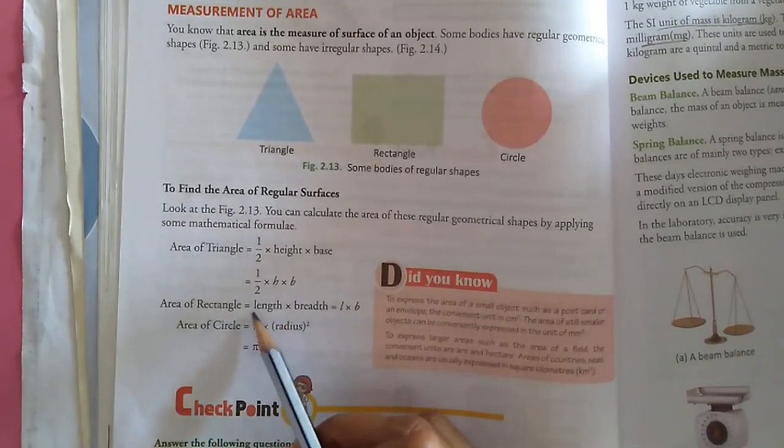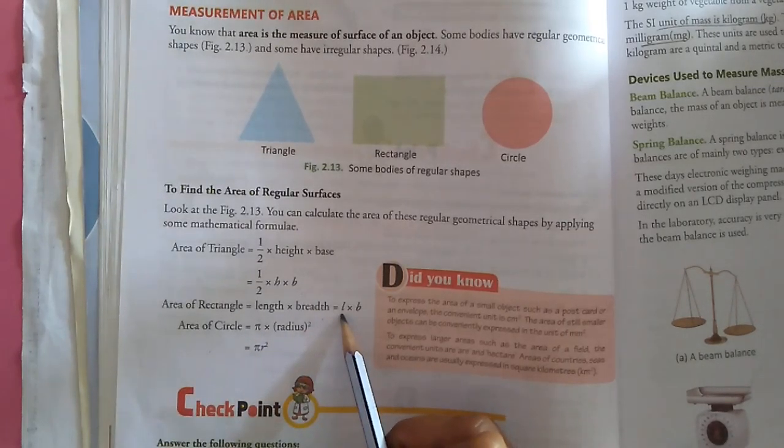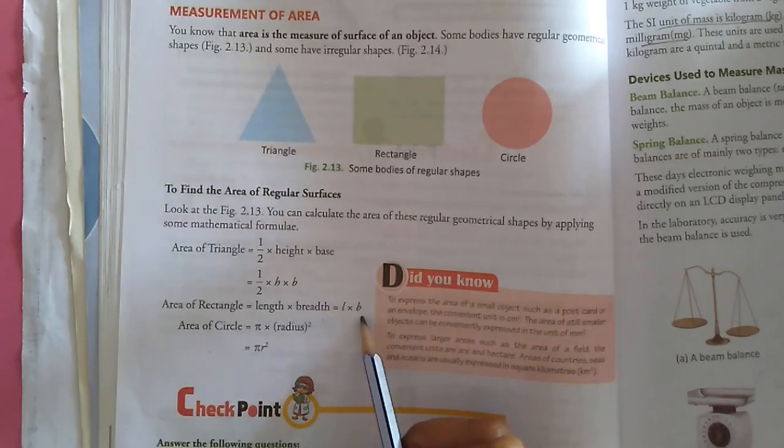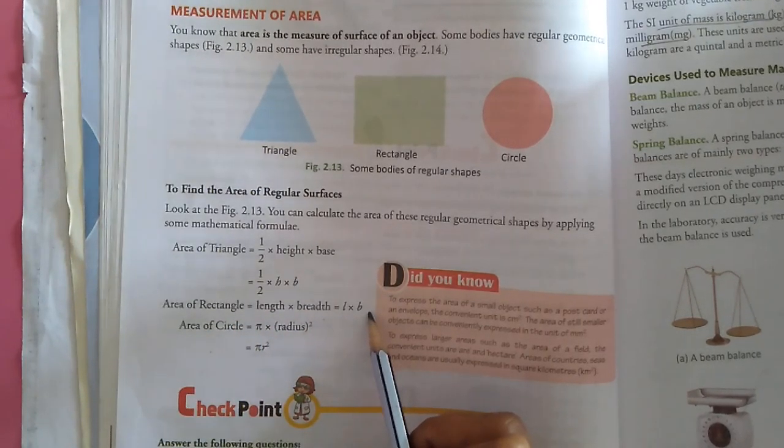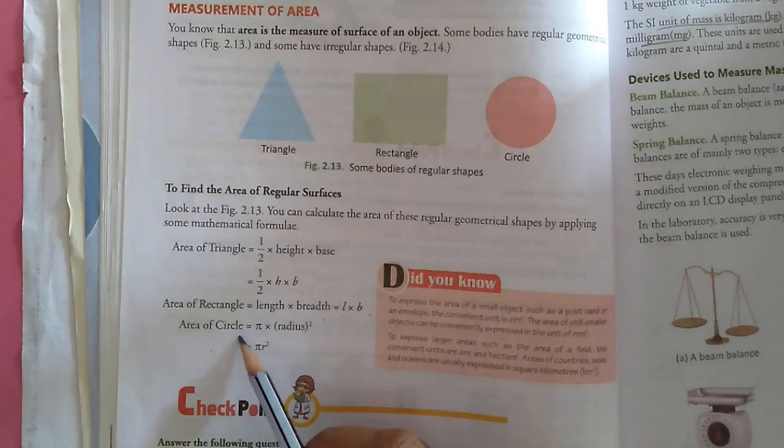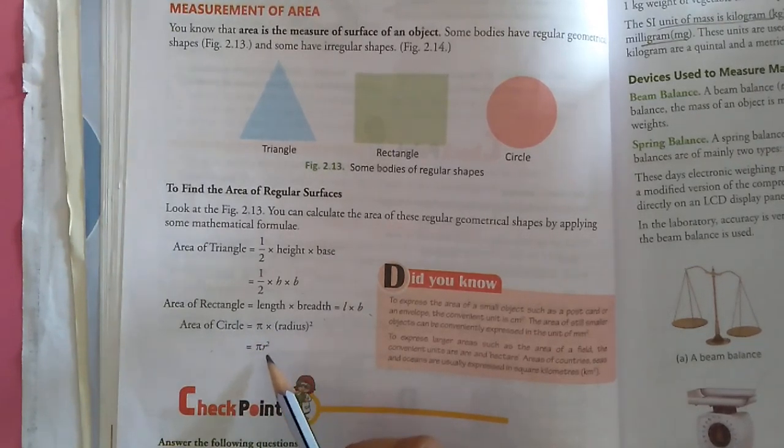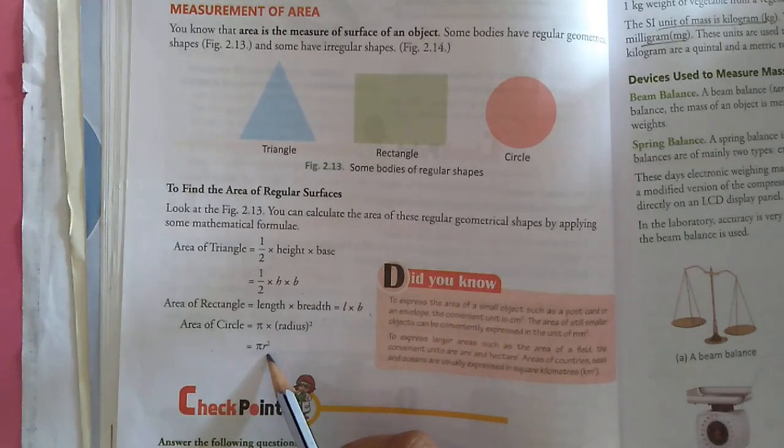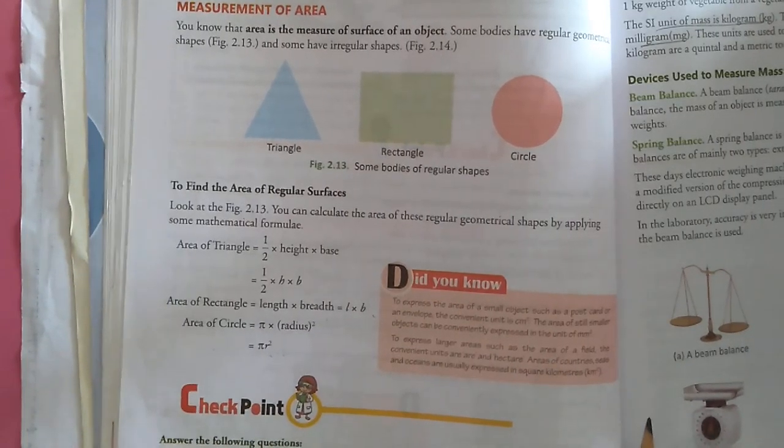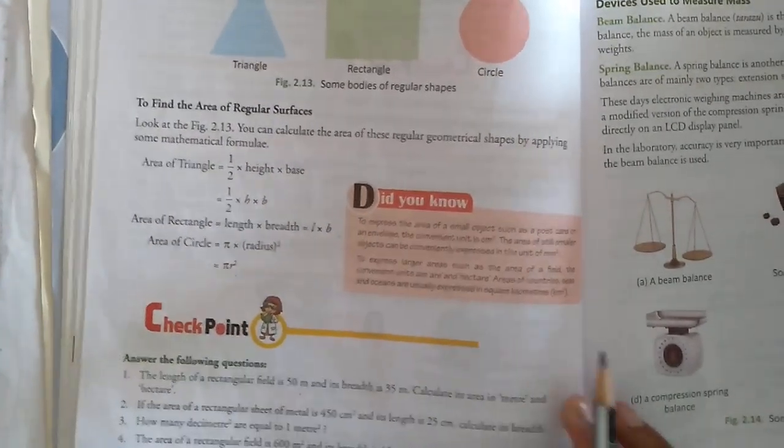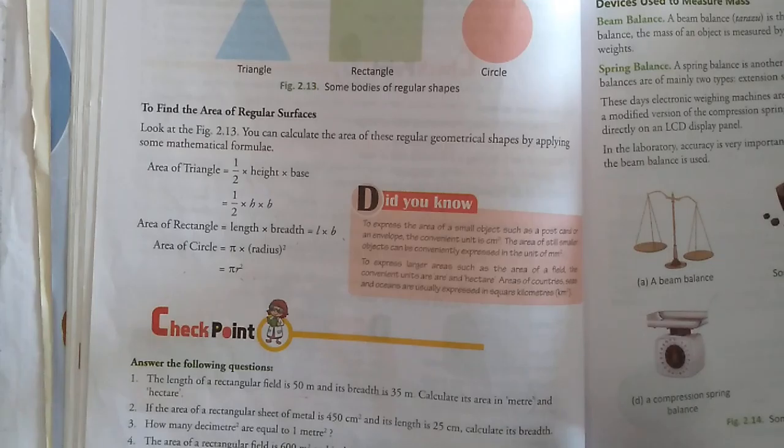Next, area of rectangle equals to length into breadth. Length is represented by L and breadth by B. So that's why area of rectangle equals to L into B. Next, area of circle equals to pi into radius square. Radius is denoted by R. That's why area of circle equals to pi R square.